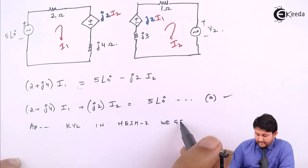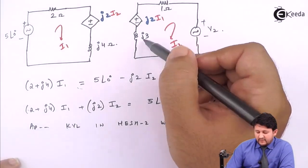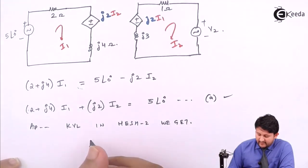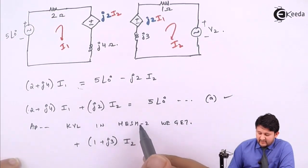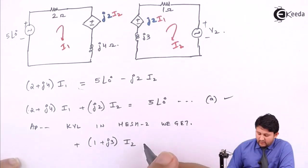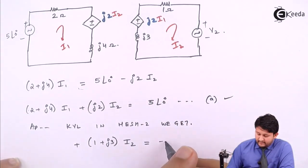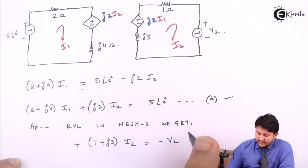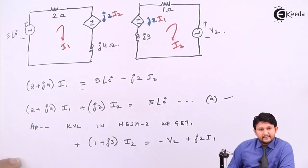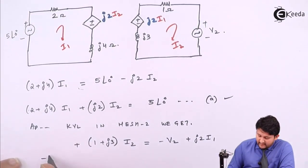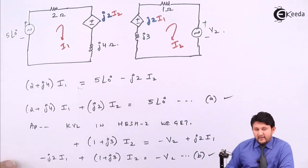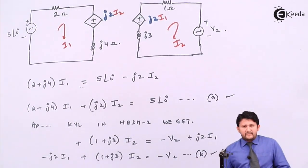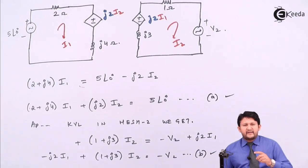Applying KVL in mesh 2, combining resistance and reactance gives 1 + j3. The KVL equation for mesh 2 is: j2·I1 + (1 + j3)·I2 = −V2. This is equation number 2. Ultimately we need to find V2.